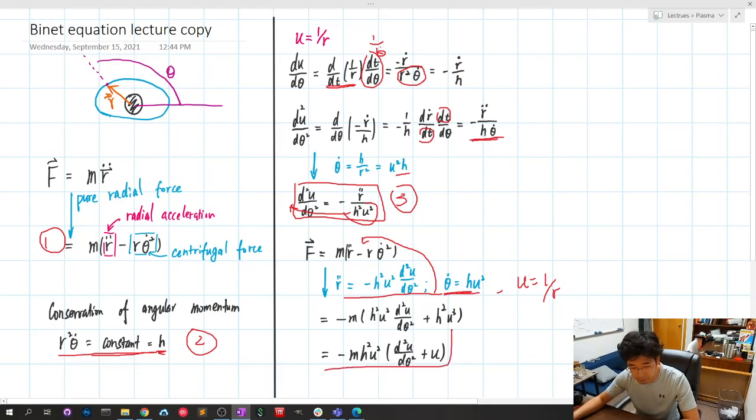Tidy it up and we have the final answer. F equals negative m h squared u squared times d squared u dθ squared plus u.